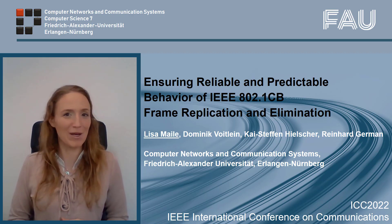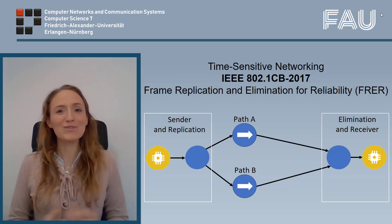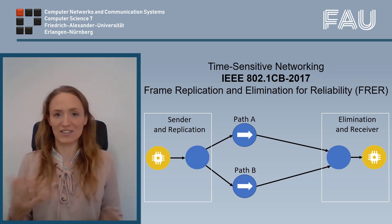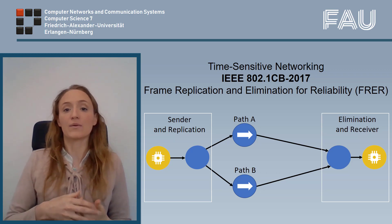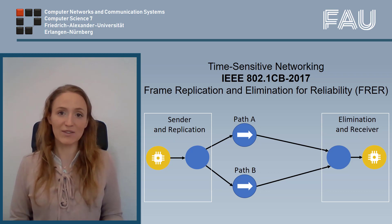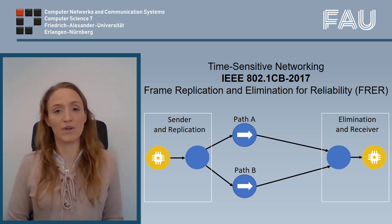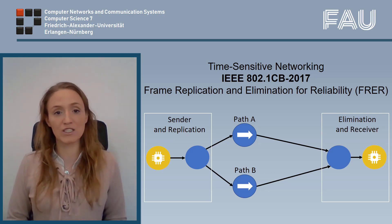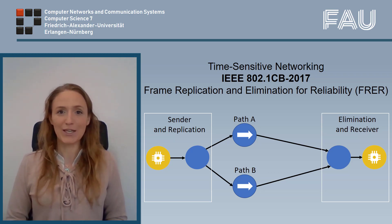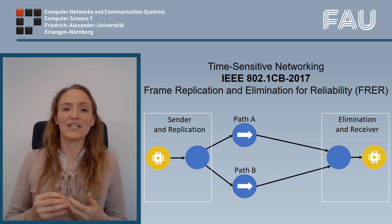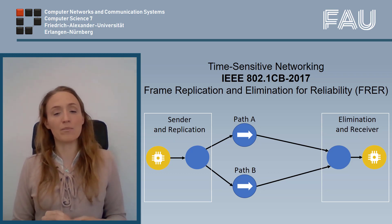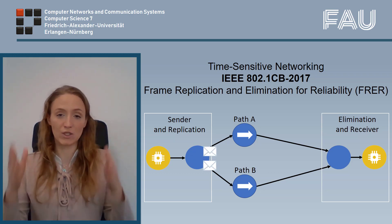Let me show you an introduction about what this talk will be about. We will discuss time-sensitive networking, short TSN. TSN standards extend Ethernet to enable ultra-reliable and low-latency communication. The standard we will discuss in particular is IEEE 802.1CB. The whole name is Frame Replication and Elimination for Reliability, but we will just call it FRER in this talk. FRER was designed to offer protection against link and other transmission failures by sending packets over two or more disjoined paths.